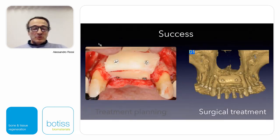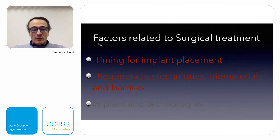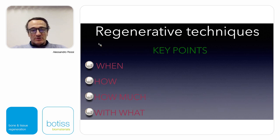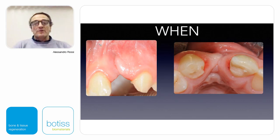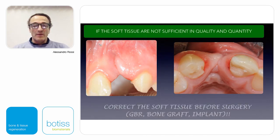Now we speak about the surgical treatment in more detail for the aesthetic area. We have to consider which regenerative technique, biomaterials, and barriers to use, and consider the timing of implant placement. I think the most important part of my presentation concerns these four key points: when to do regeneration, how to do it, how much to increase, and with what. The most important prerequisite is to have good soft tissue — sufficient in quality and quantity — because without it, we may have a lot of problems.